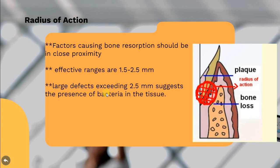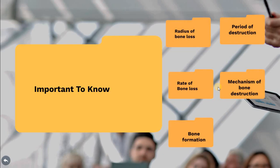For large defects exceeding 2.5 millimeters, it is suggested that there will be a presence of bacteria directly on the bone and on the tissue. So if there is a distance of 1.5 to 2.5 millimeters, the bacterial plaque can exert its action. Other than that, it has no effect unless there is floating or unattached plaque attached directly to the bone and soft tissue. This is one of the features regarding bone loss.